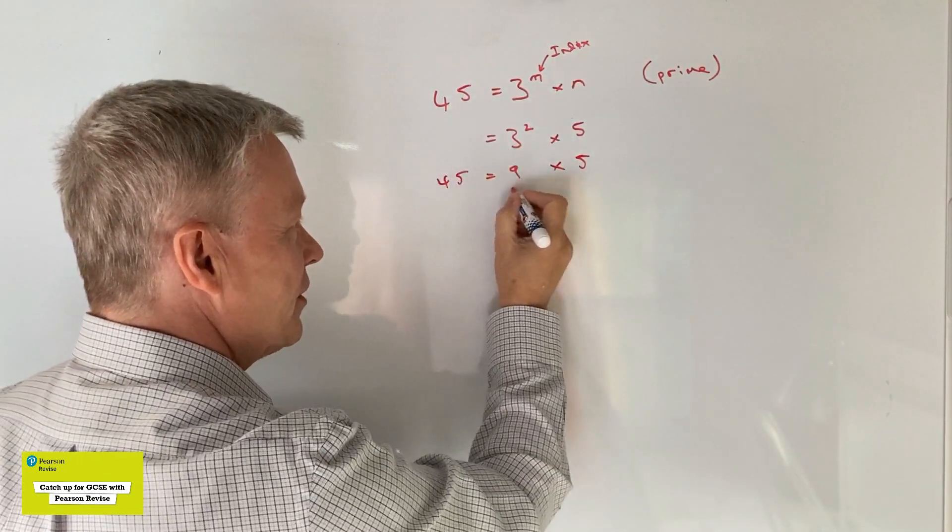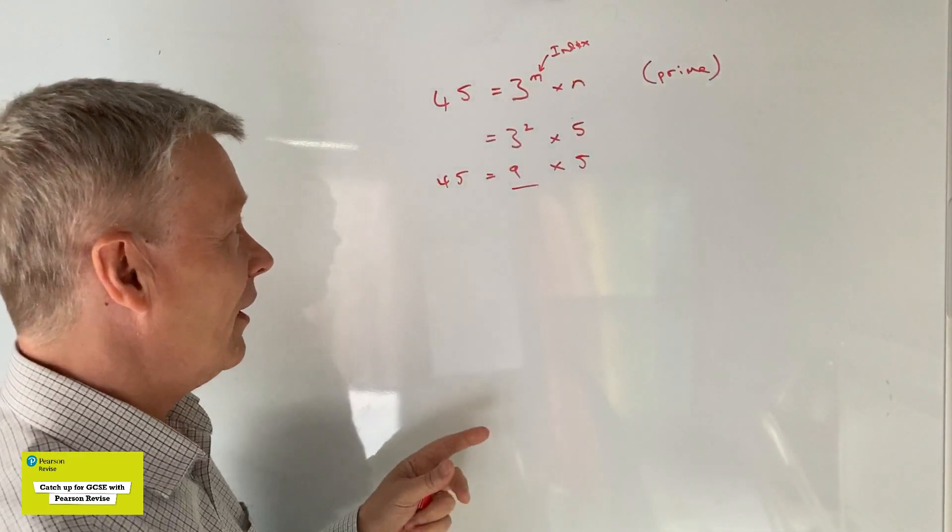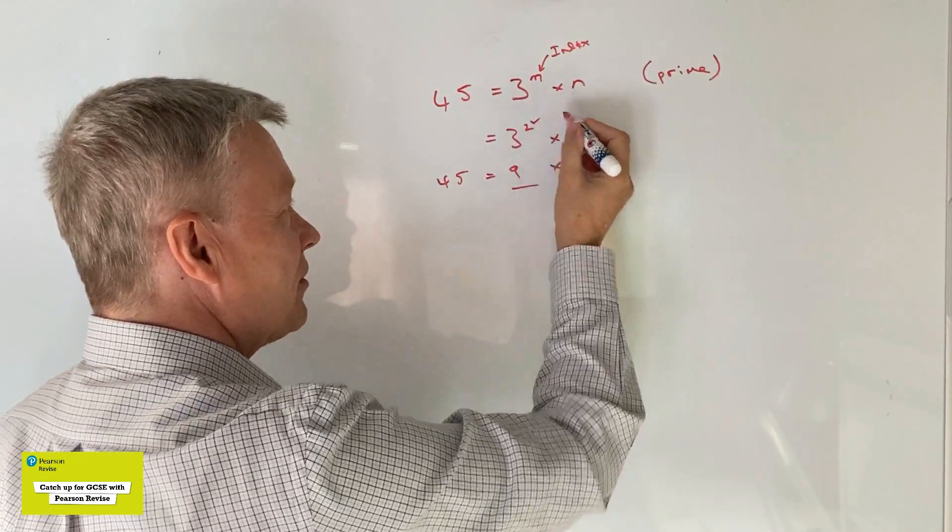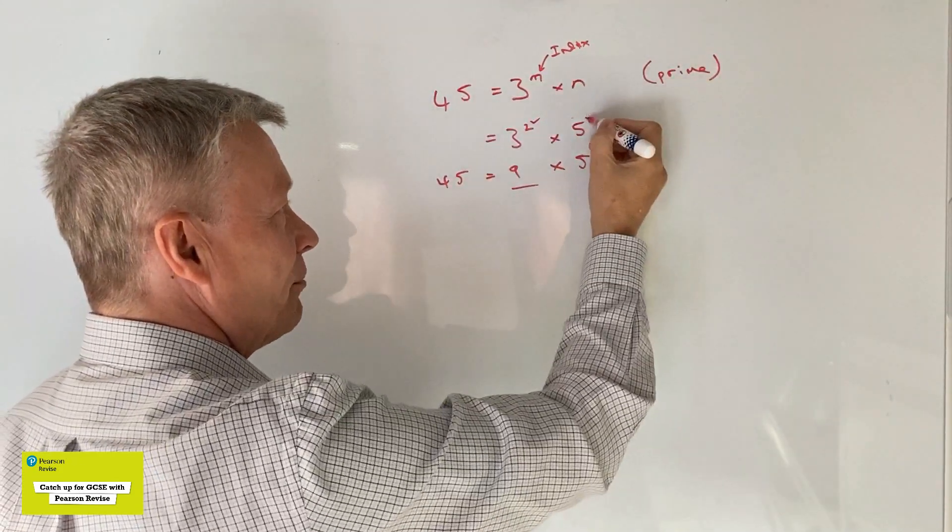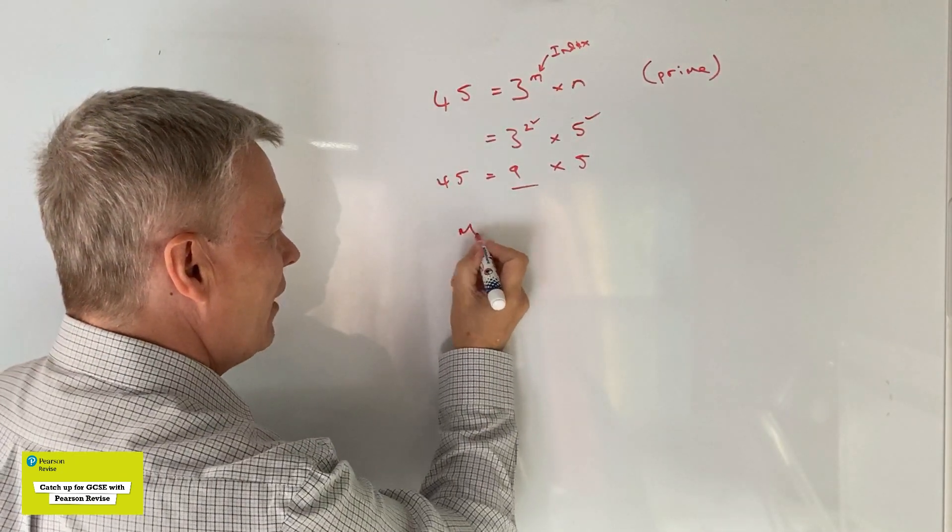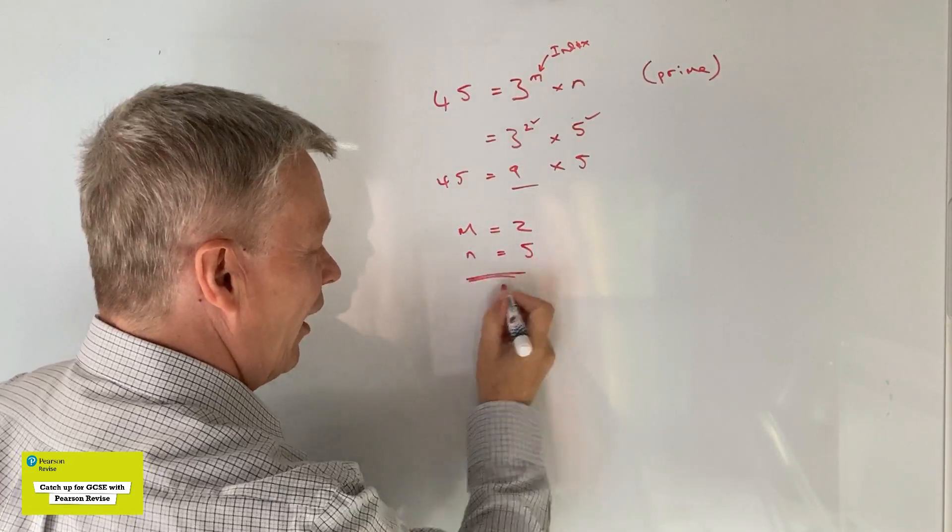And guess what, that equals 45. So actually that answers my question because 2 is a prime number, so that ticks that box, and also 5 is a prime number, so that ticks that box. So m is going to be equal to 2 and n is going to be equal to 5.